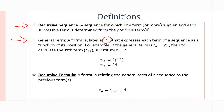The general term is a formula that expresses each term of the sequence as a function of its position, meaning we can use the position n in an equation to figure out what number is actually in that position. For example, we have the general term Tn equals 2n. To calculate the 12th term, T12, we substitute n equals 12 into our general term: T12 equals 2 times 12, which equals 24. So at position 12, we have the number 24.